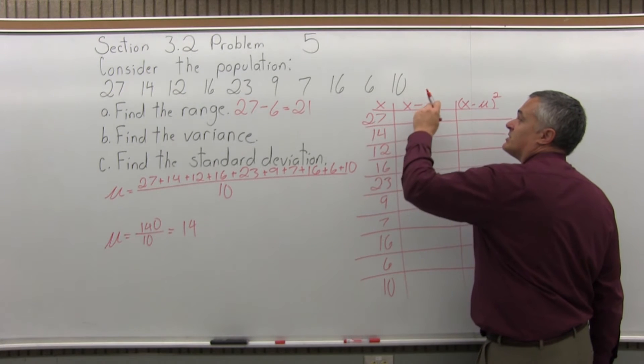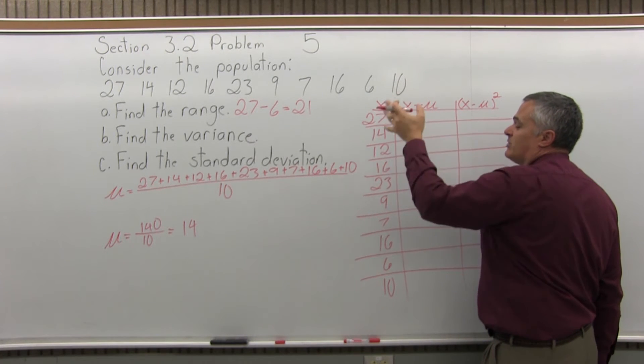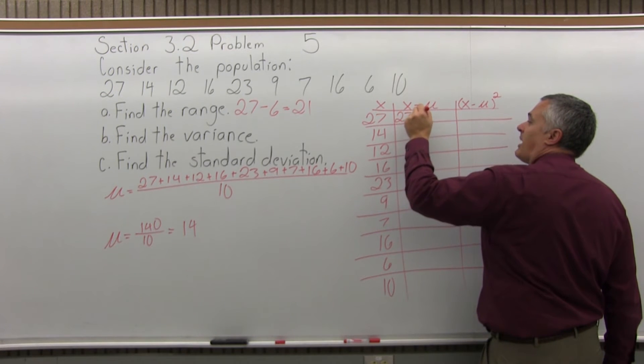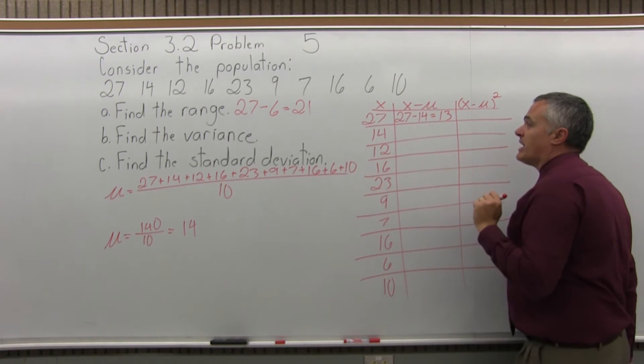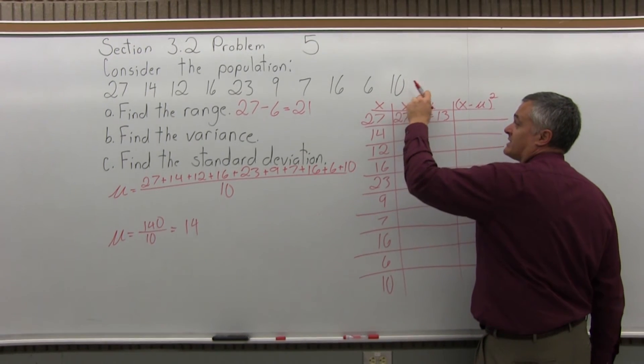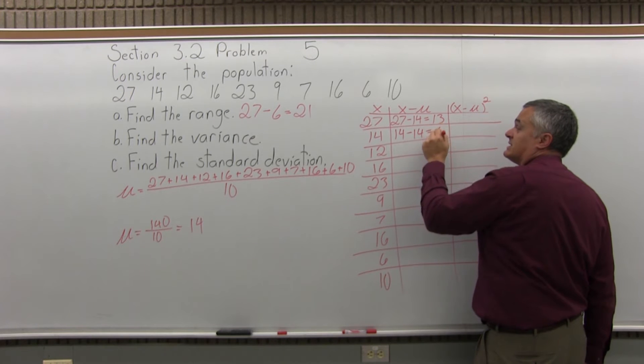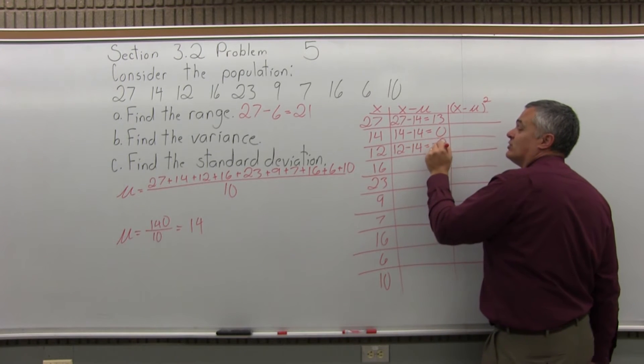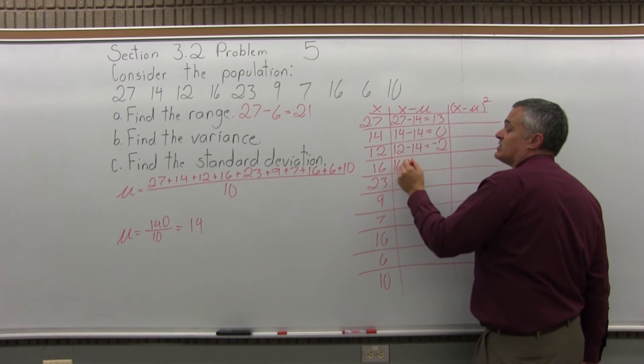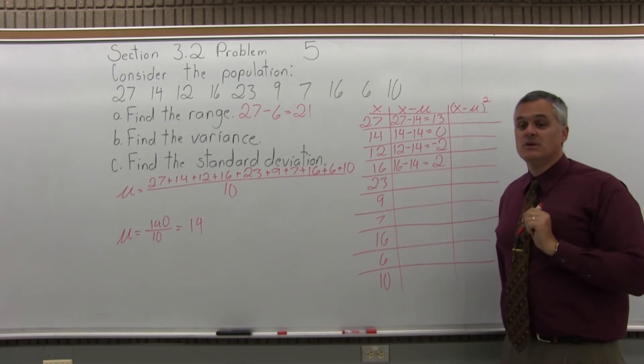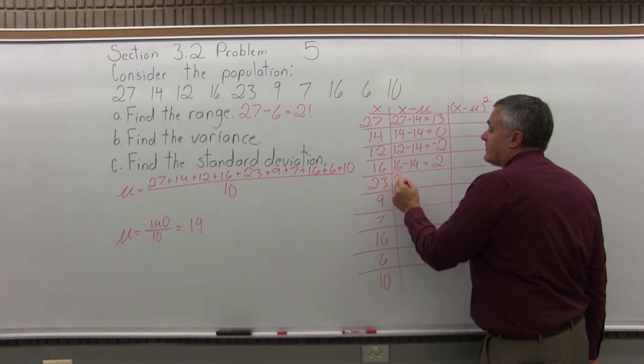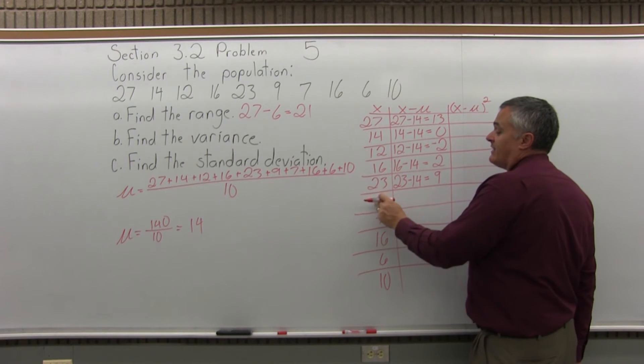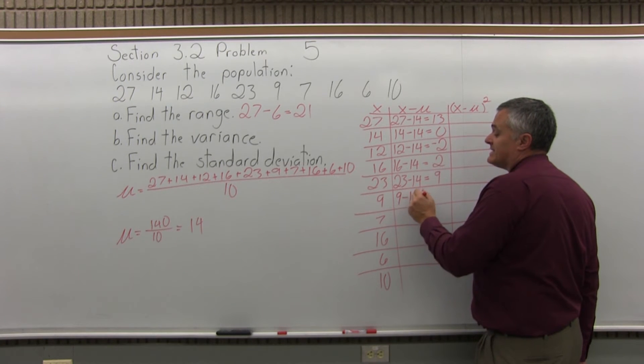Now, from each value of x, I'm going to subtract off the mean, which we label mu this time. My value for mean is 14. So x minus the mean will be 27 minus 14, which is 13. The next value of x is 14, so 14 minus 14, which is 0. The next value is 12, so 12 minus 14 is negative 2. Next is 16, so 16 minus 14, which is positive 2. The next value is 23, so 23 minus 14, which is positive 9.